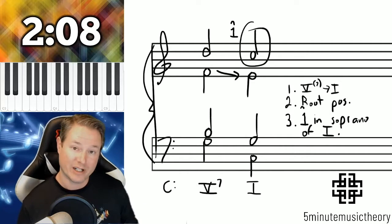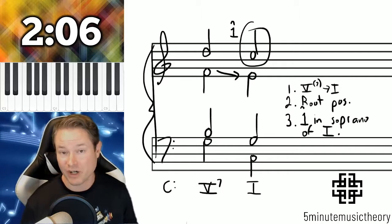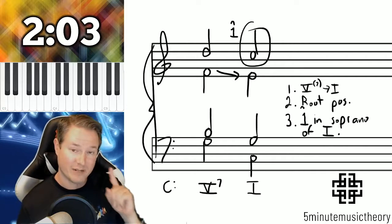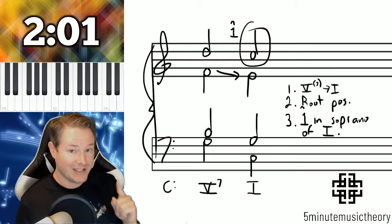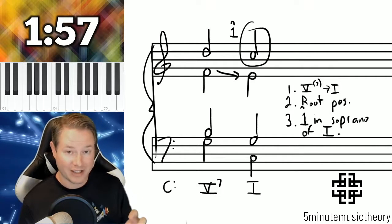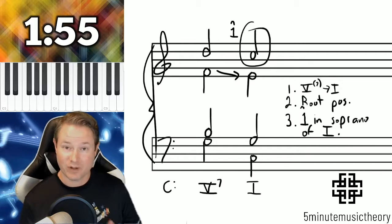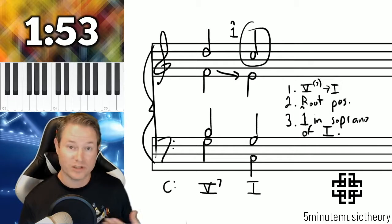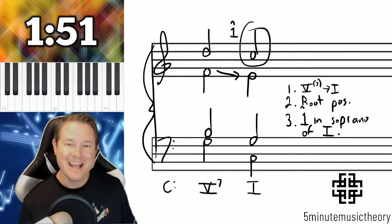The next few videos, we're going to cover the imperfect authentic cadences of which there are three types. There's only one type of PAC. And again, the PAC, perfect authentic cadence, the A and the C are authentic cadence, which means that it's some sort of a dominant function into some sort of a tonic function.